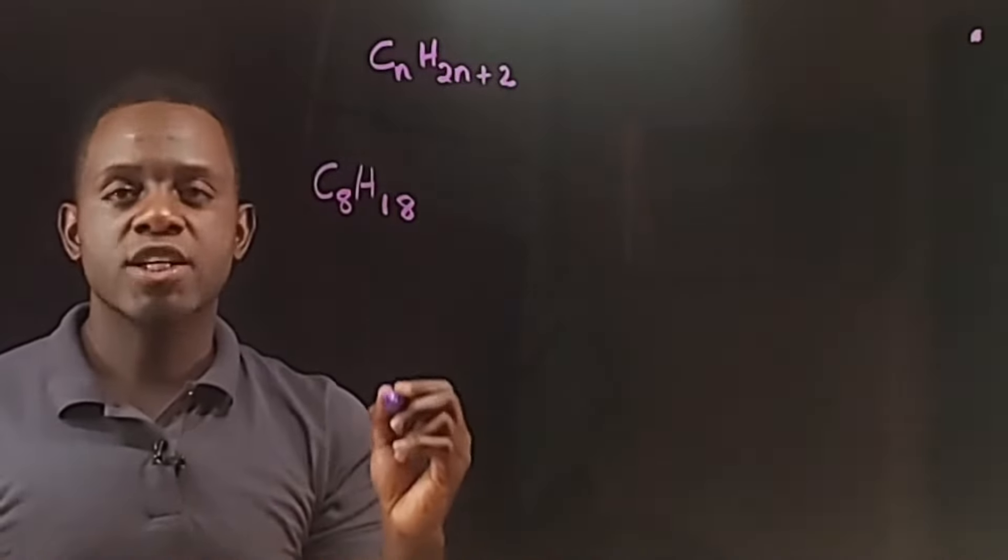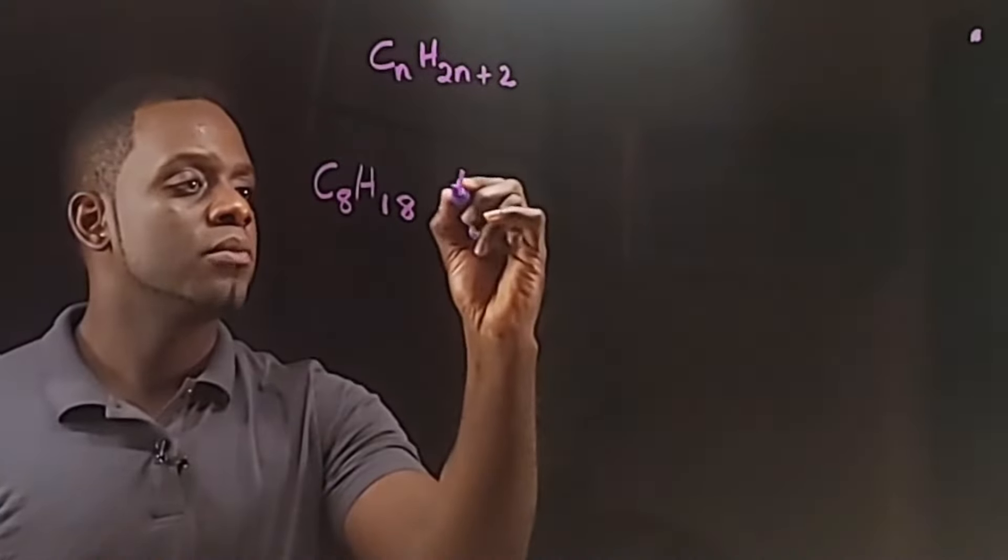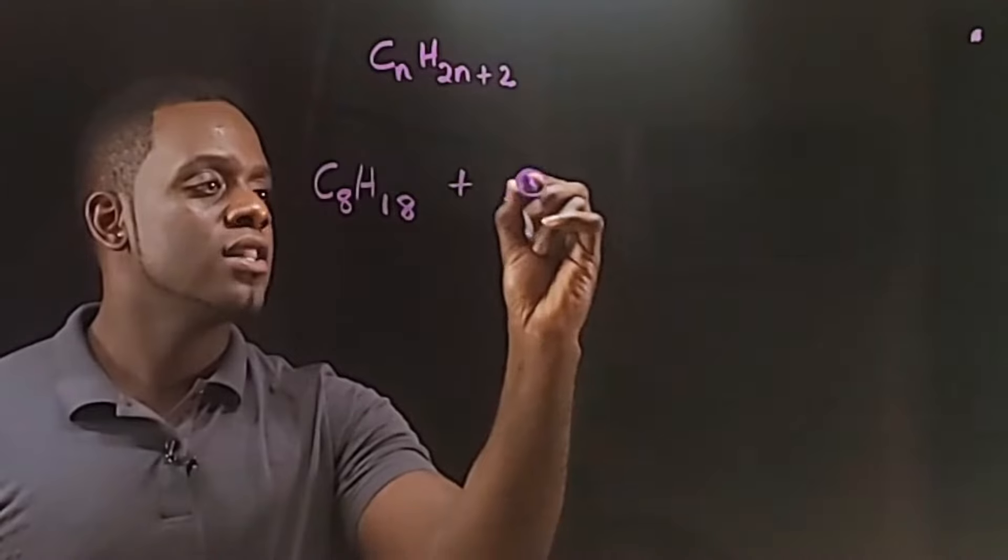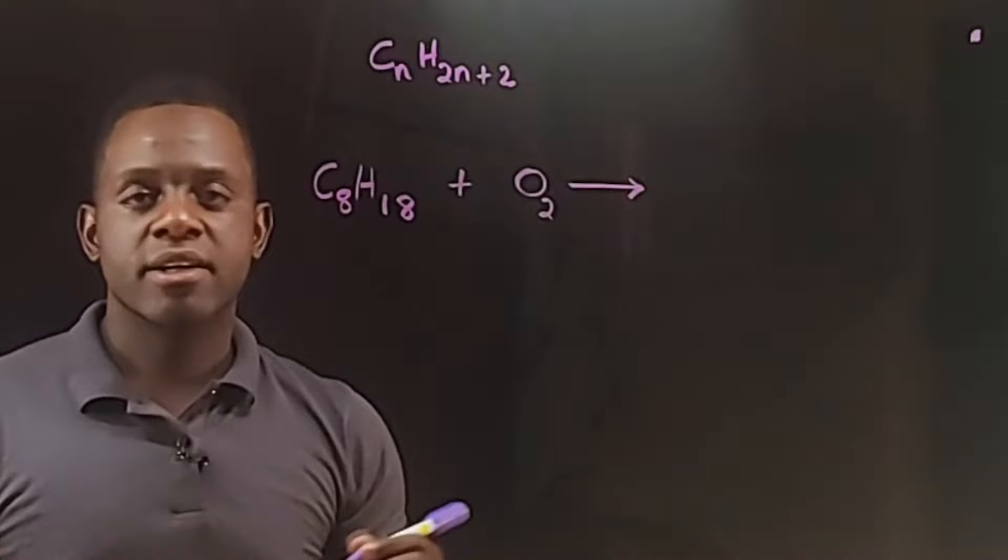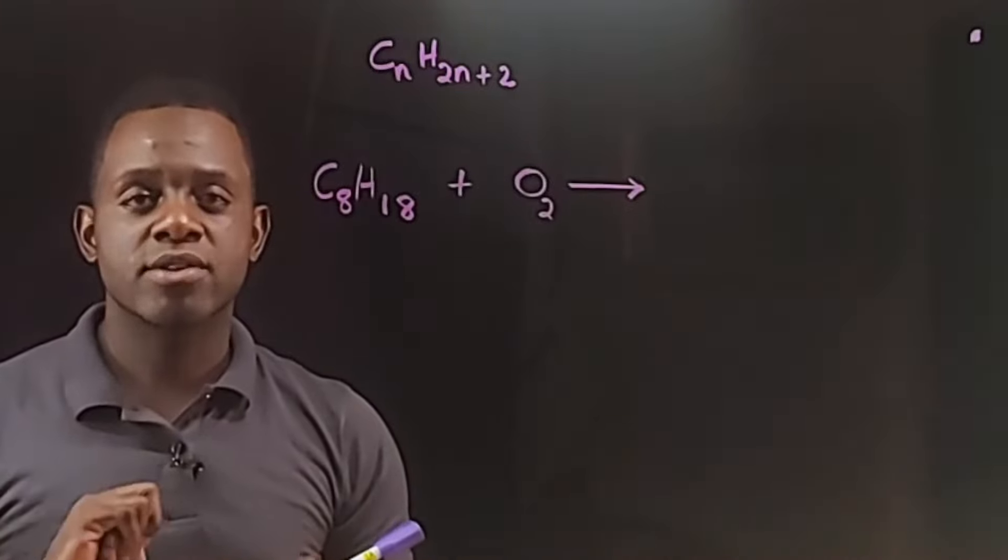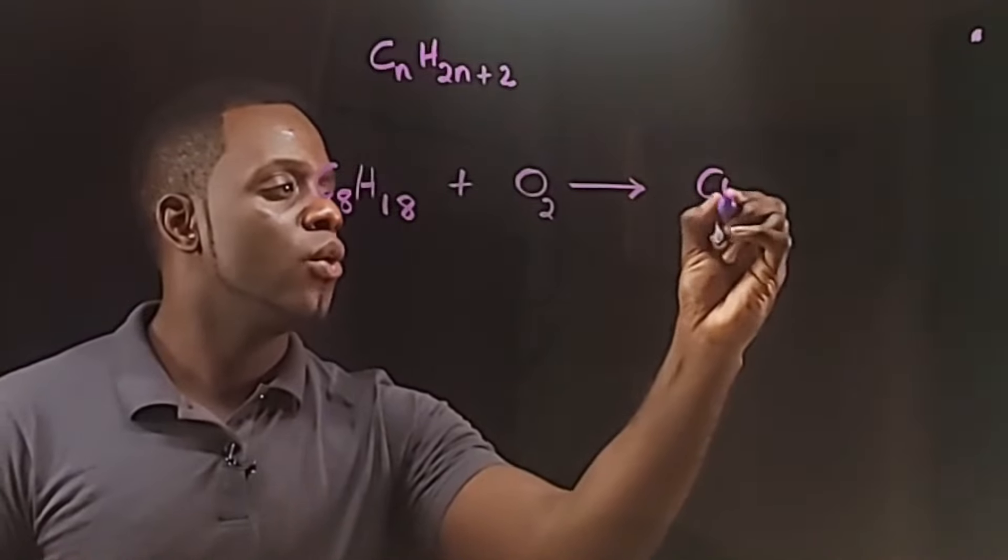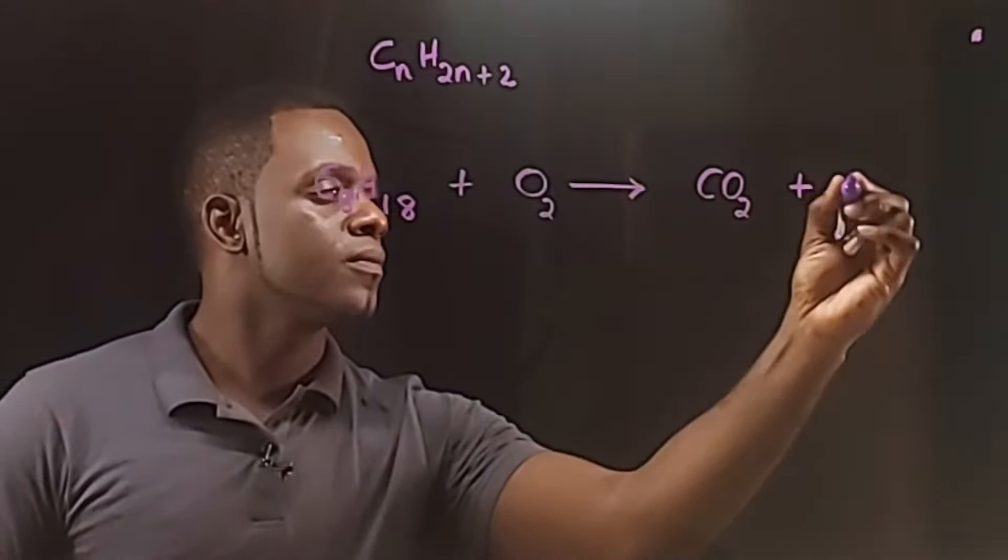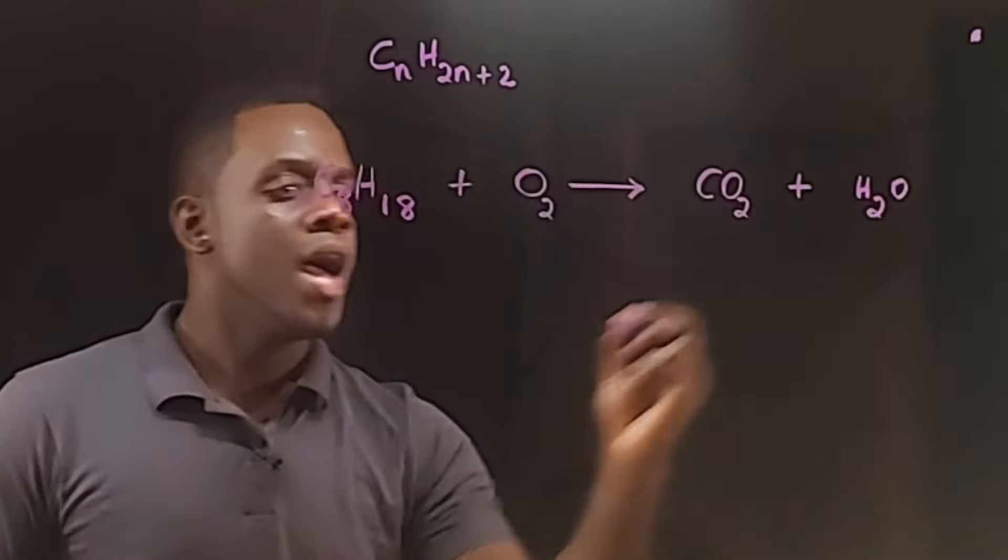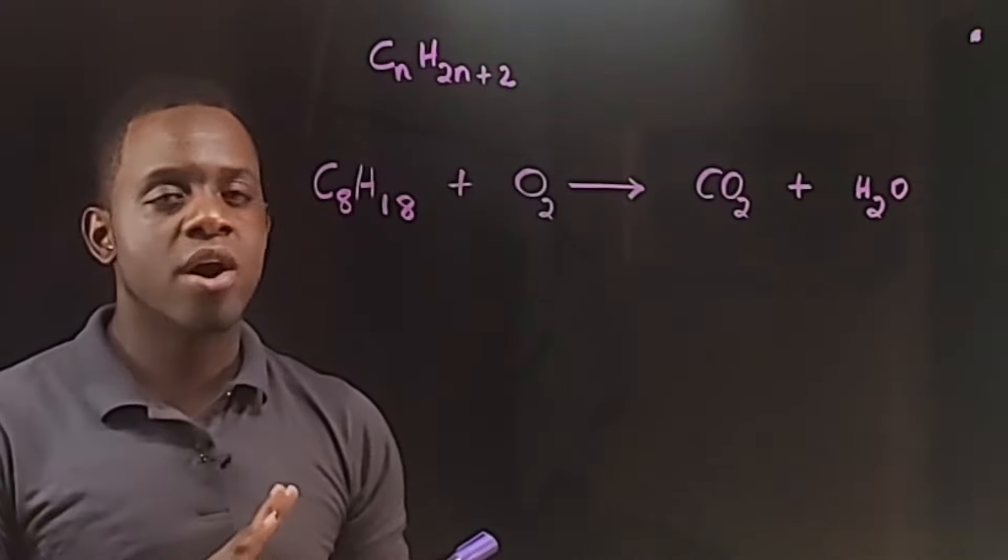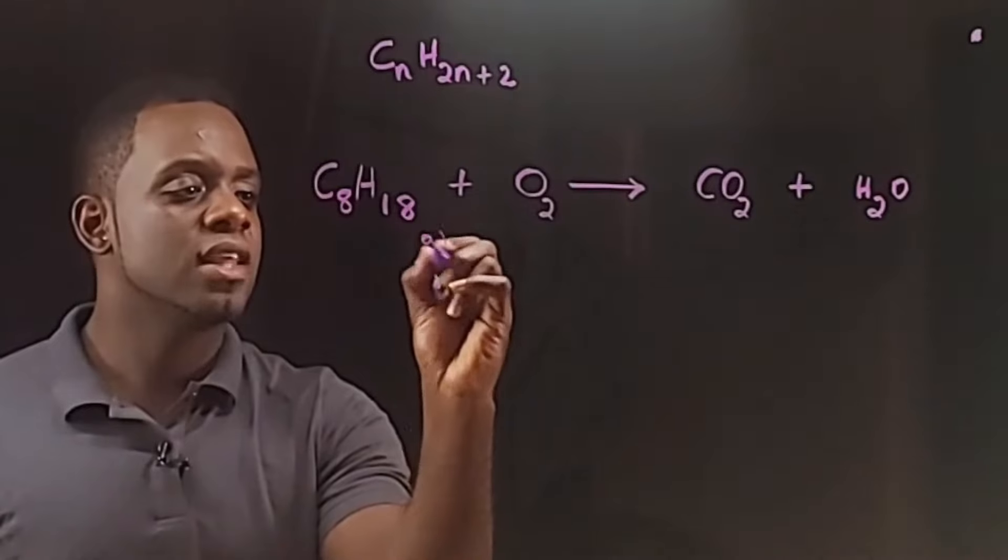Combustion reactions involve oxygen, so plus oxygen is the only other reactant in the reaction, and there will be two products: carbon dioxide and water. So CO2 and H2O. Now all of these compounds, both on the reactant side and the product side, will be gases.